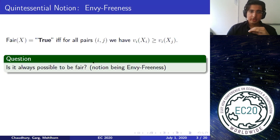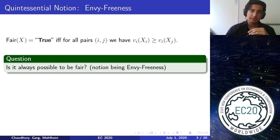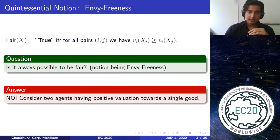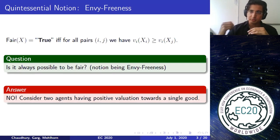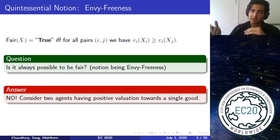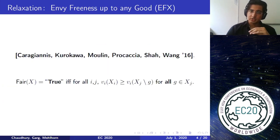As soon as we define a fairness notion, the first question is: is it always possible to be fair? No matter how many agents or what valuation functions they have, can we always be fair? In this case the answer is no. Consider a simple example: two agents with positive valuation towards a single good. Since the good is indivisible, it must be allocated to exactly one agent, and the agent who gets nothing will envy the other. So we study relaxations.